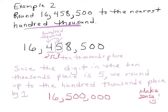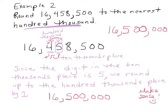Example two: round sixteen million four hundred fifty-eight thousand five hundred to the nearest hundred thousand. The hundred thousands digit is the four. We go directly to the number to its right — that's a five. Remember, five or more means the number gets bigger. So we add one to the hundred thousands place, which gives us five hundred thousand. The other digits are reduced to zeros, so the answer is sixteen million five hundred thousand.